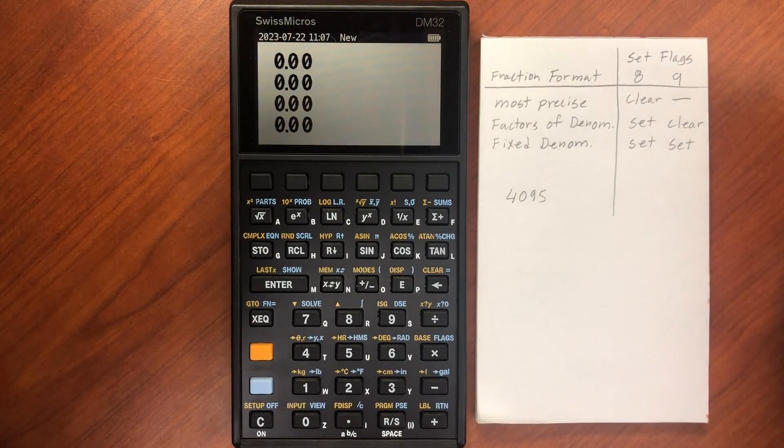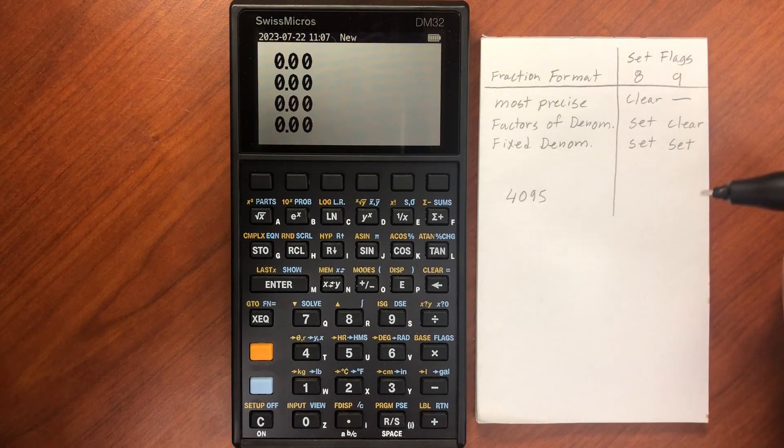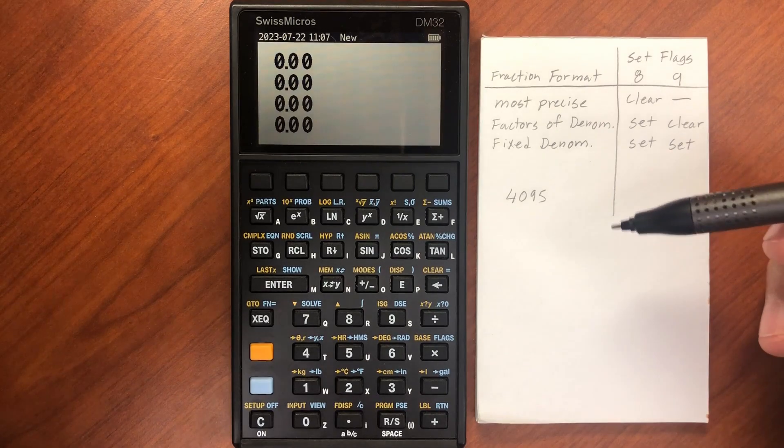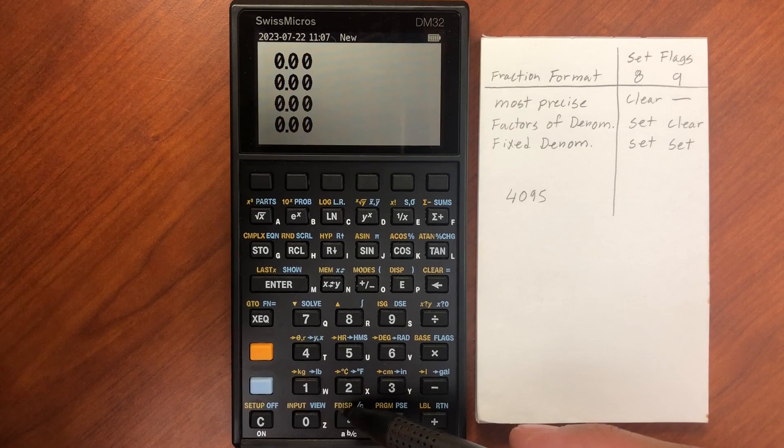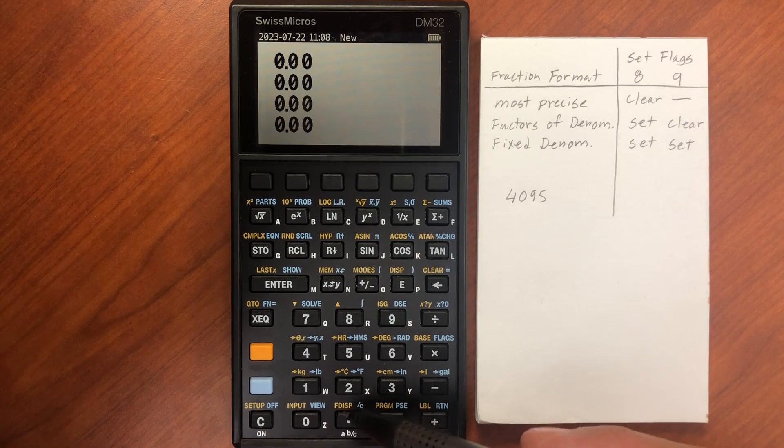Now let's cover one of my favorite features on the DM32, as well as its predecessor, the HP32S2. That's the fraction display, which is what this FDISP at the bottom means.